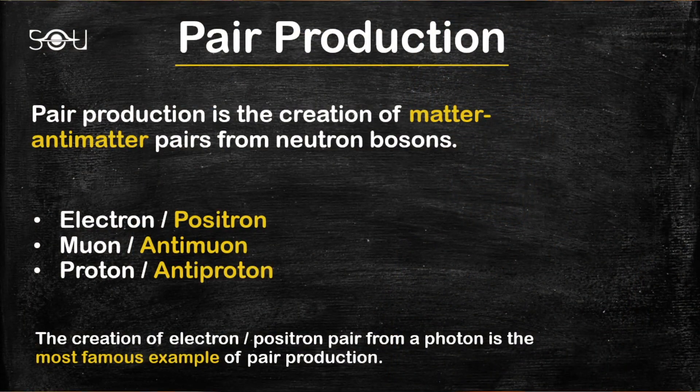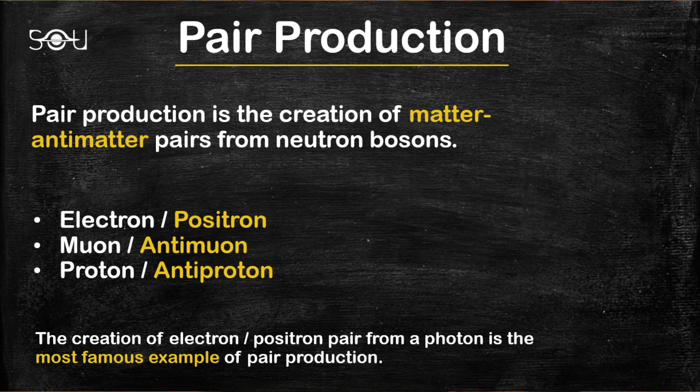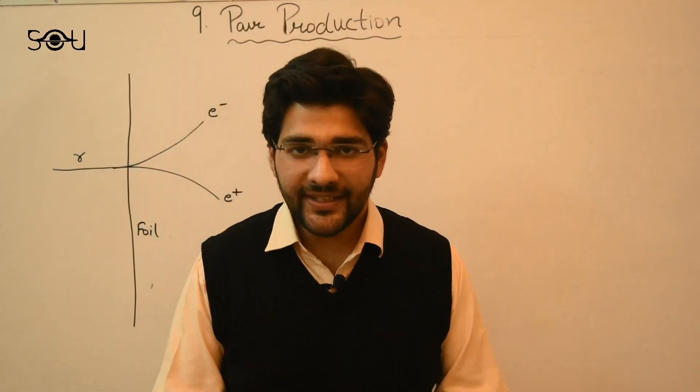Technically speaking, pair production is the creation of particles and their corresponding antiparticles from neutral bosons. Other examples include the creation of muon and antimuon and a proton and antiproton.